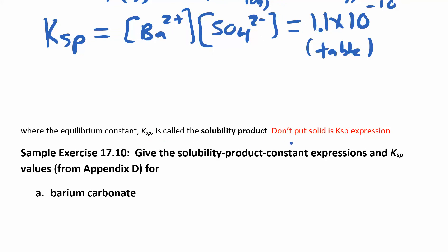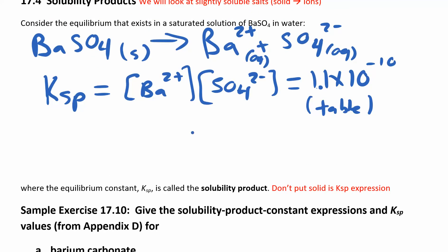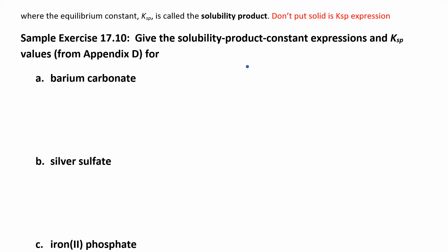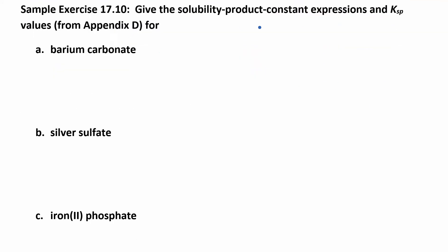The Ksp is called the solubility product. Don't put solids in your Ksp expression — this equilibrium expression involves concentrations. If you know these concentrations you can figure out the Ksp, and if you know the Ksp you can figure out the equilibrium concentrations. Let's get some practice writing out solubility product constants; you can look up the values in Appendix D.